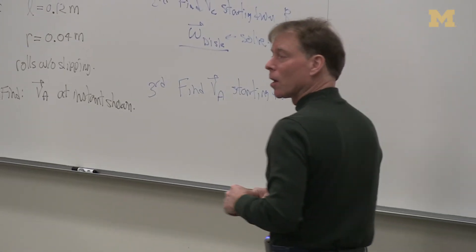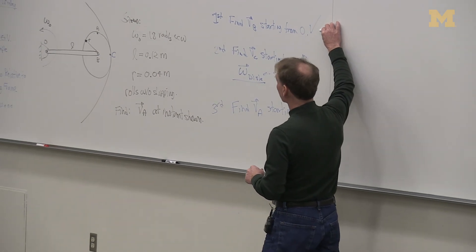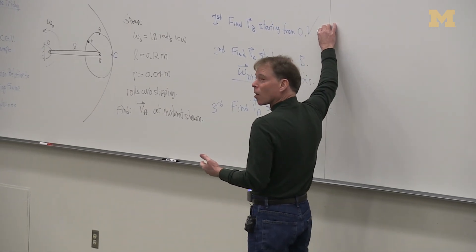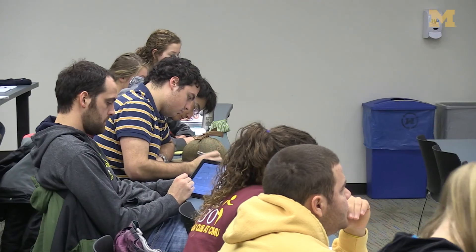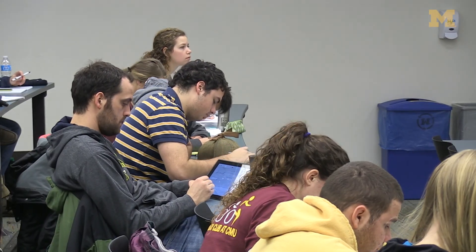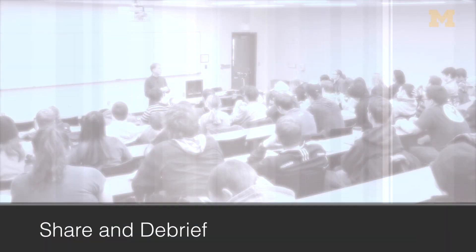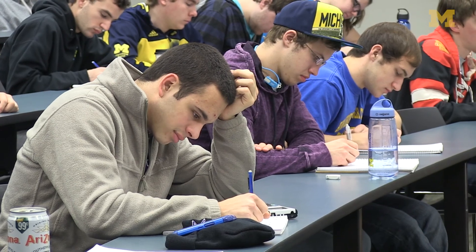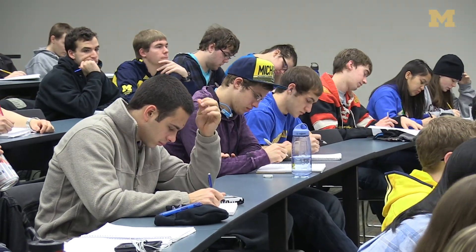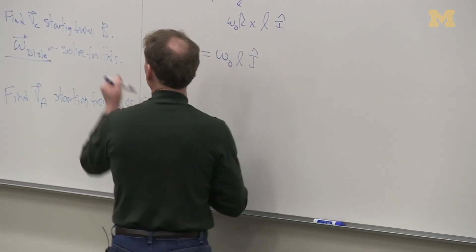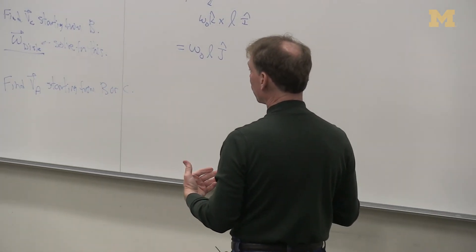Take a minute and on your own, what I'd like you to do is the first step right here: velocity analysis to find the velocity of point B. I'll give you a minute. All right, quickly — show of hands: I either did it or I know how to do it. Excellent, let me catch up to you then. So step one, we finished that. The second part of our strategy is to now find the velocity of C starting from B.